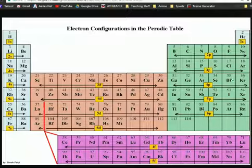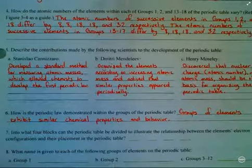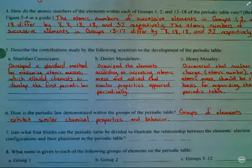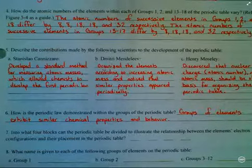I get to 36, it's non-reactive. I get to 54, it's non-reactive. I get to 86, it's non-reactive. So, groups of elements exhibit similar chemical properties and behavior.